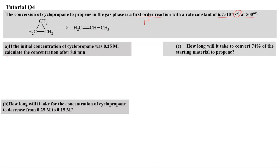For part A of Question 4, if the initial concentration of cyclopropane was 0.25 molar, calculate the concentration after 8.8 minutes. This is the initial concentration, denoted as A0, and we have to find the concentration A after 8.8 minutes. We need to be careful of the unit of time, because the rate constant is in units of per second, but the time given is in minutes. So we have to convert the time into seconds.